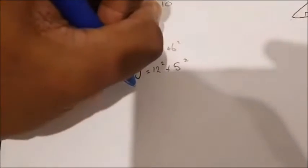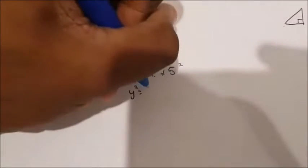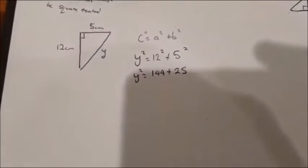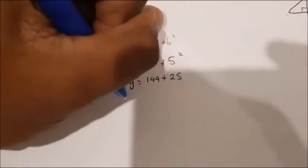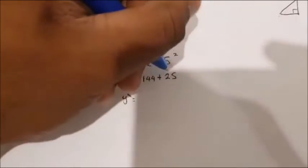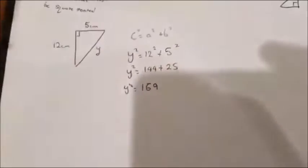Similarly with the other one, you'd have to complete the square. So it would be 144 plus 25. After that, you add them together. So y squared will equal 169.